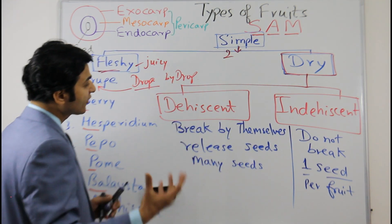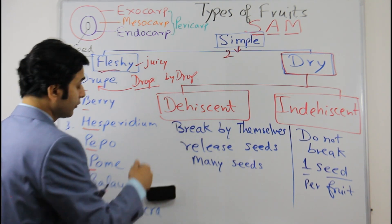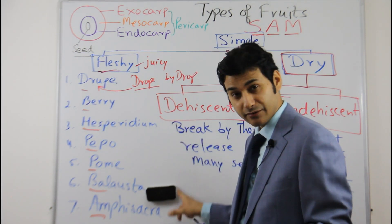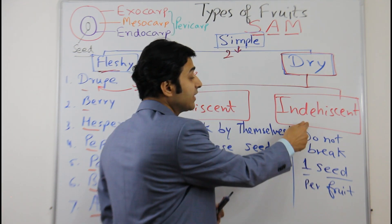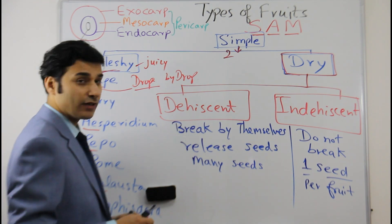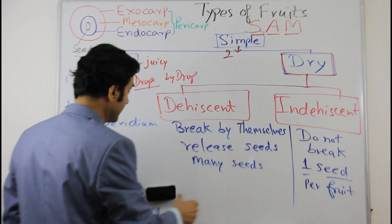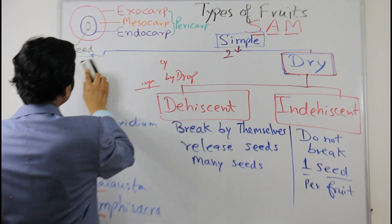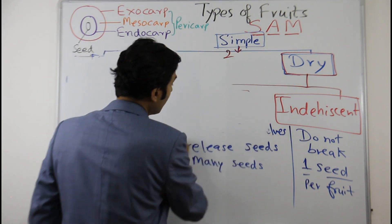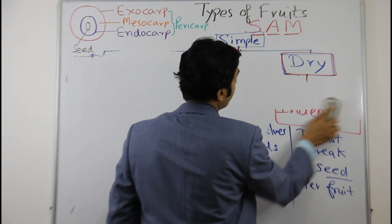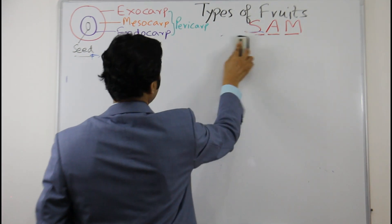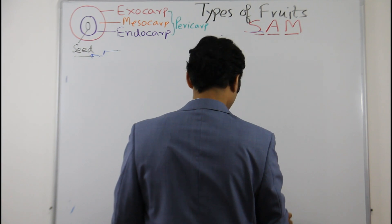Just as we saw Drupe, Berry, and Hesperidium in fleshy fruits, in dehiscent fruits we also have many types, and indehiscent fruits also have many examples and categories. I will discuss dehiscent types first, then indehiscent, giving you an easy way to remember all types.